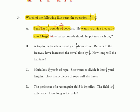Option B: A trip to the beach is usually a one and one-half hour drive, and repairs to the freeway have increased the travel time by one-quarter. We know that's not right because that's not division — that's multiplication. So B is out.